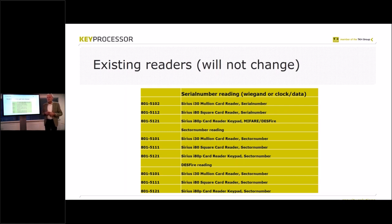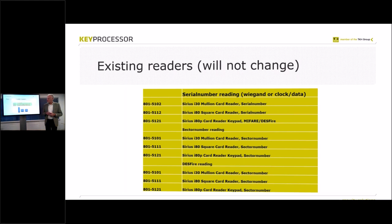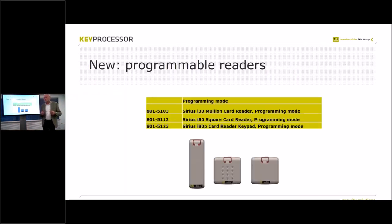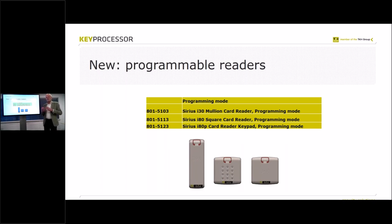So what do we have now? Those are the programmable readers. As you can see, they are exactly the same readers — they look exactly the same. We still have the i30, the i80, and the i80 pin code readers, and they can do almost the same as the other nine reader types before. That's the new reader.